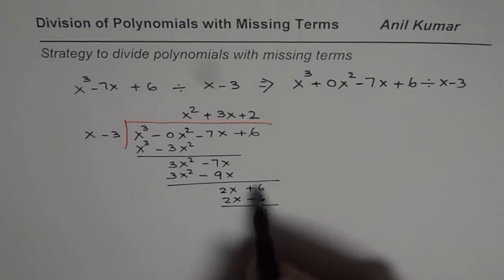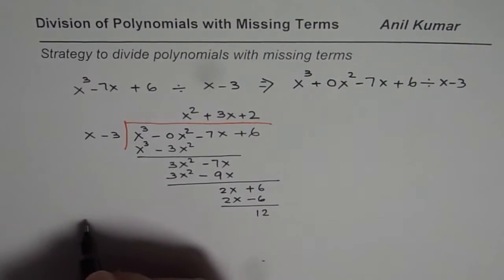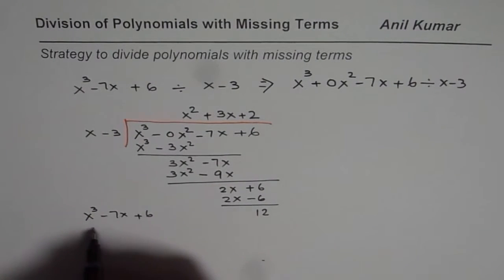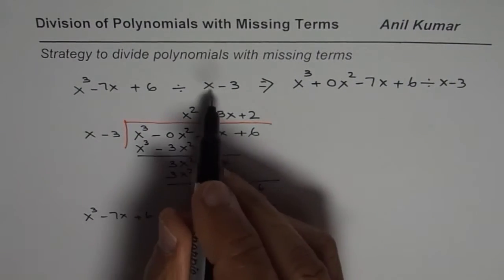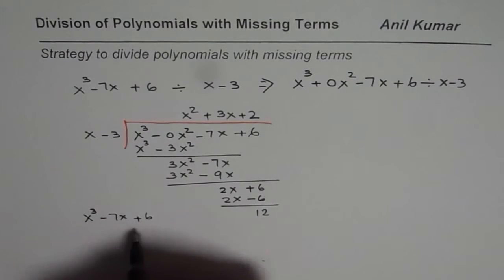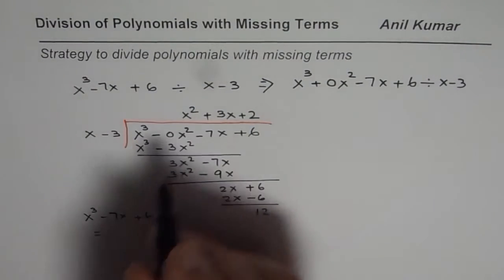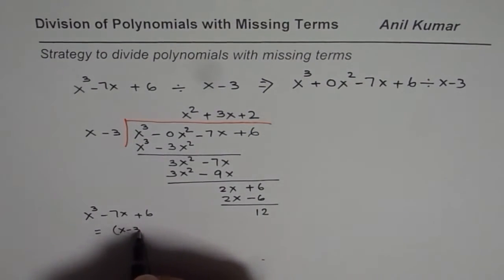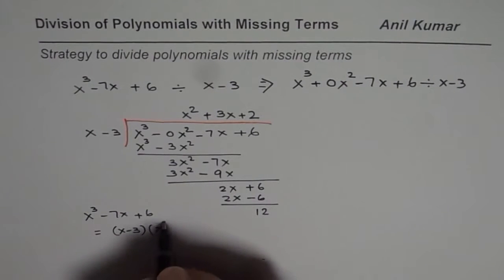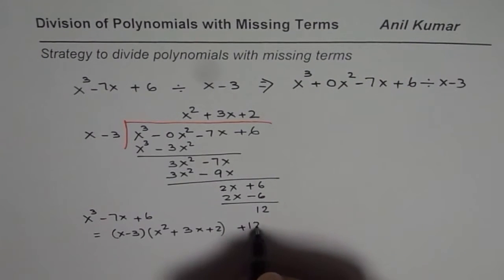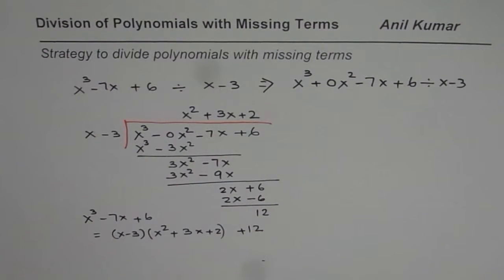That is how you divide. And now, once you divide, you could also write down the division statement. We could write the division statement as x cubed minus 7x plus 6. When you divide that by this, we could write this as equal to multiply divisor by the quotient which is x minus 3 times x squared plus 3x plus 2 plus the remainder 12. That is how you could write your division statement.